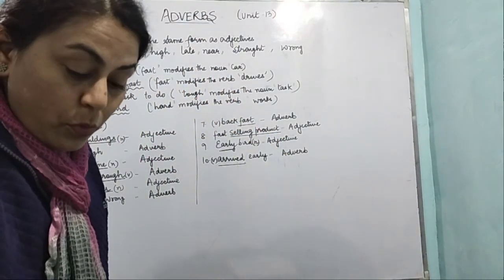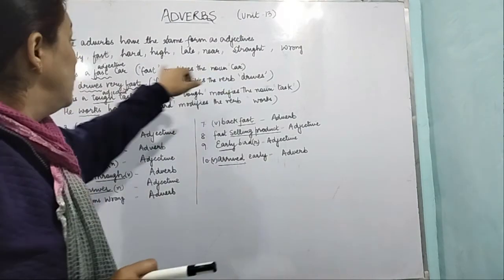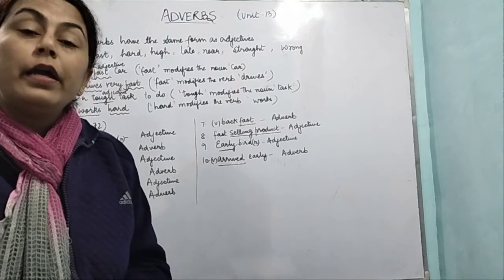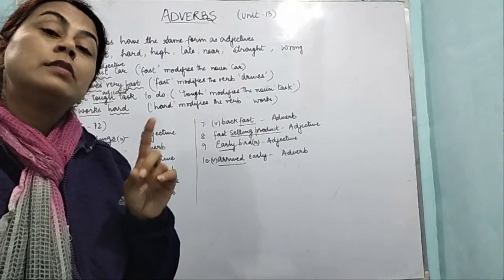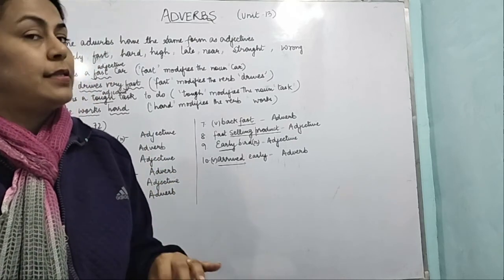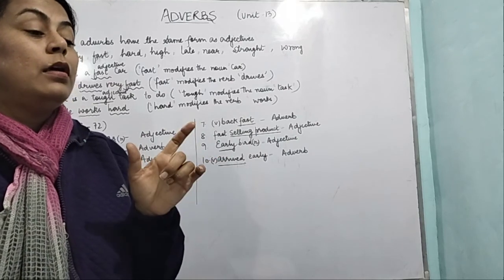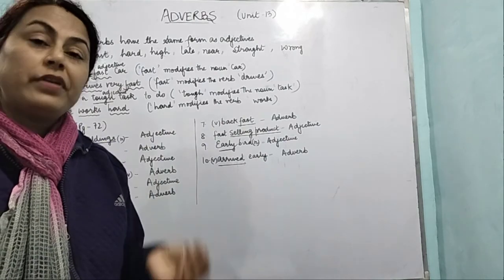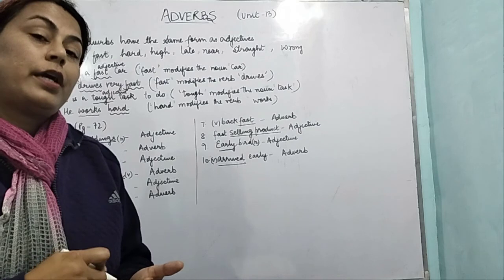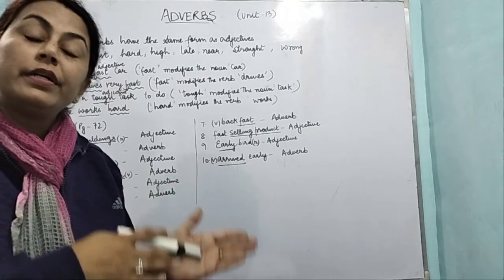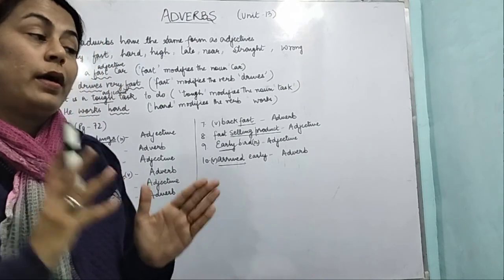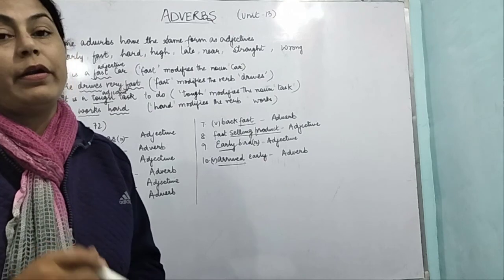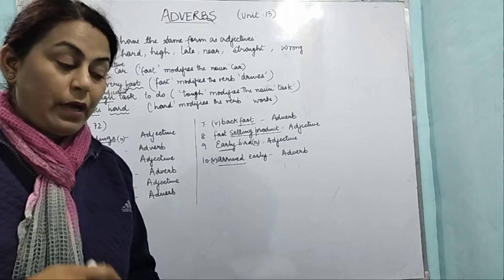I hope it is clear to you. When the word is qualifying a noun, like here it is a fast car, it is qualifying a noun, that means it is used as an adjective, because adjective qualifies and modifies the noun. But adverb, it modifies either an adjective, verb, or another adverb, but not a noun. If you have to differentiate between an adverb and adjective, you have to check out which word it is modifying. Whether it is modifying a noun or whether it is modifying a verb or another adverb or an adjective. If the word is modifying a noun, that means it's an adjective. If it is modifying a verb or another adverb or an adjective, that means it is used as an adverb. I hope it is clear to you.